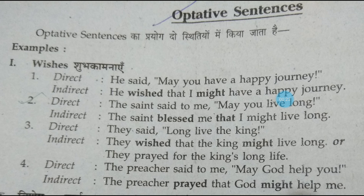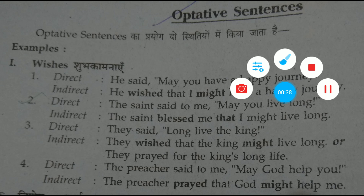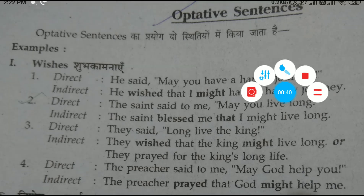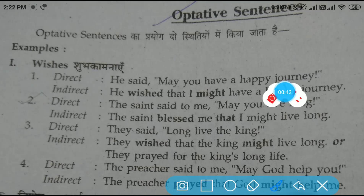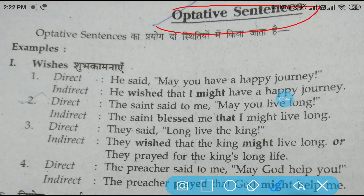For this, I have taken so many examples you can see over here. But before making you understand about the rules, I want to ask you what you understand by optative sentence. An optative sentence is a kind of sentence which expresses prayer, wish, or it may also be a curse.